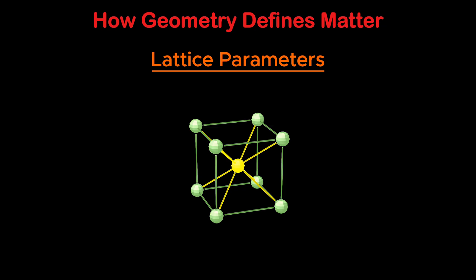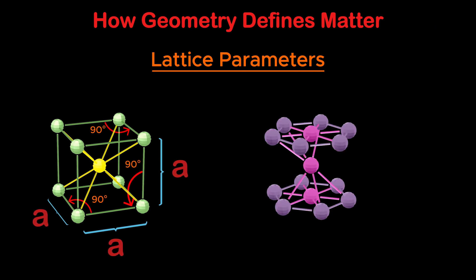Lattice parameters describe the size and angles of the unit cell. They tell us how long each side of the unit cell is and what are the angles between those sides. For example, a cube has equal sides and all 90 degree angles. A hexagonal unit cell has two equal side lengths, a third side that is different, and one of the angles is 120 degrees.